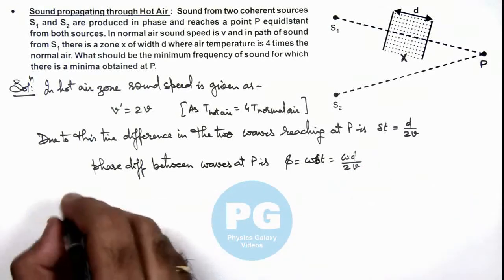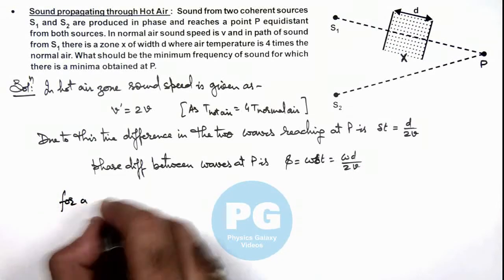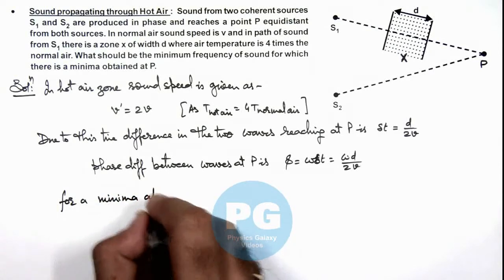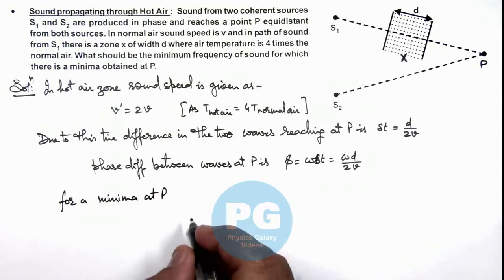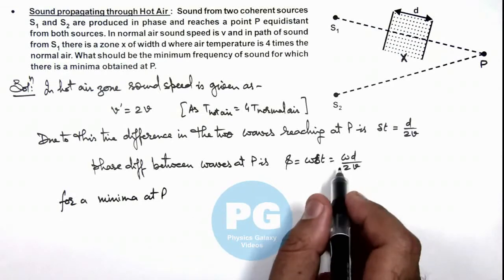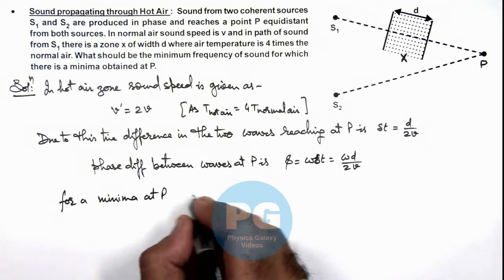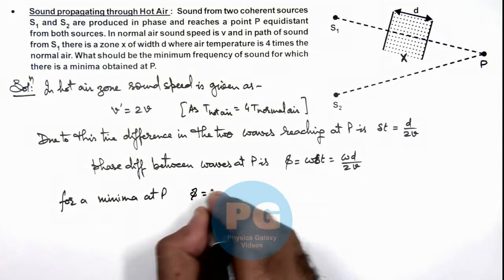Now in this situation, for a minima at P, that is corresponding to destructive interference, the phase difference must be an odd multiple of π. For a minima at P, φ must be (2n+1)π.